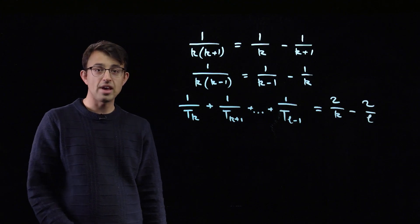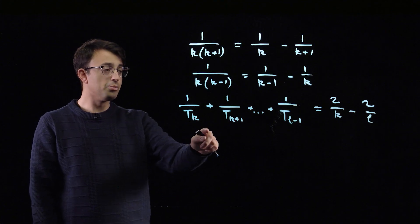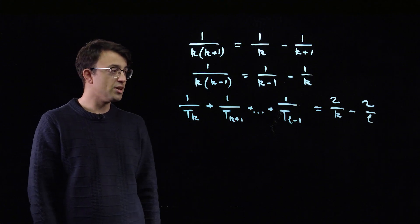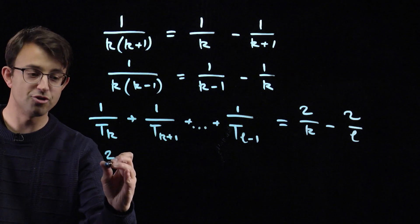We haven't yet mentioned n, which is part of the problem statement. The goal is to make a sum of reciprocals of triangle numbers equal to 1 over n. So let's see if we can find a cheap way of doing that.